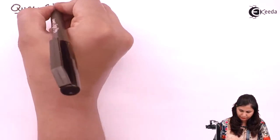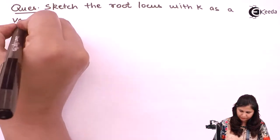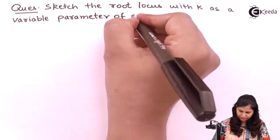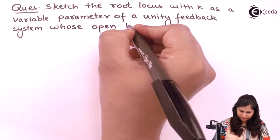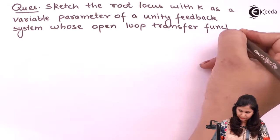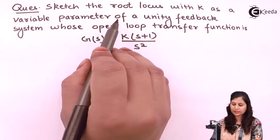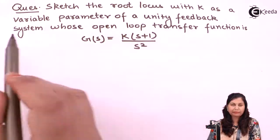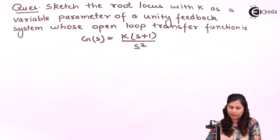In this video we are going to solve a problem on how to sketch the root locus of a system. Our problem is to sketch the root locus with k as a variable parameter of a unity feedback system whose open loop transfer function is G(s) = k(s+1) / s². Let's solve this problem.